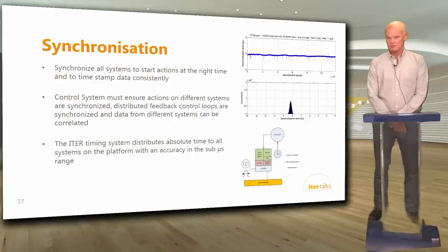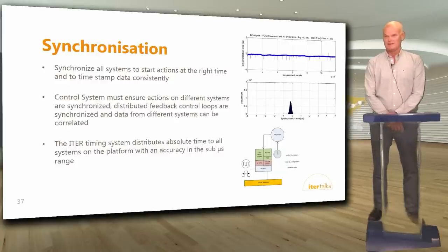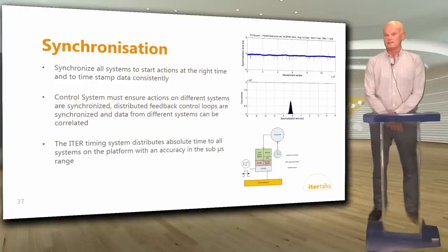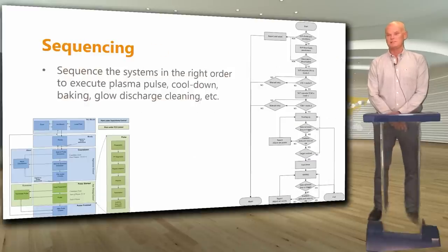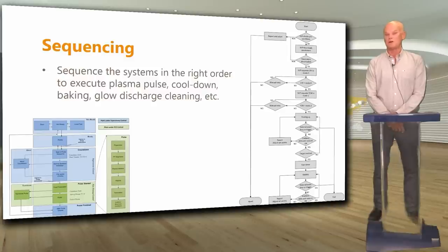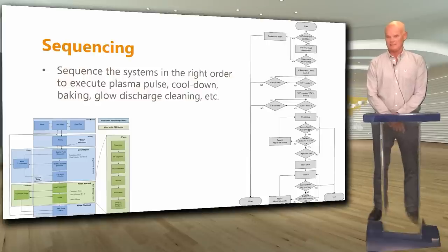Then we need to synchronize things. All systems need to be synchronized so distributed feedback control loops work correctly and data from different systems can be correlated post-mortem. The ITER timing system distributes absolute time to all systems with sub-microsecond accuracy. We also need to sequence things — for example, performing operation tasks like cooldown, baking, glow discharge cleaning, and plasma pulse, which require sequencing different systems in a certain order.